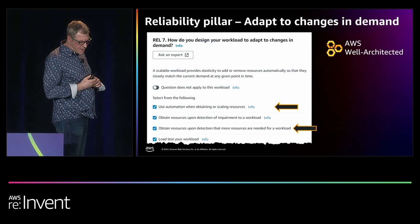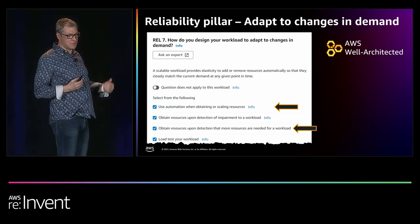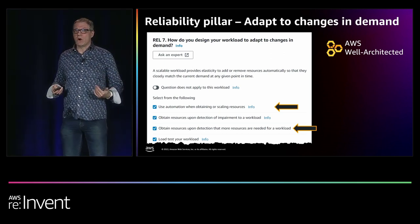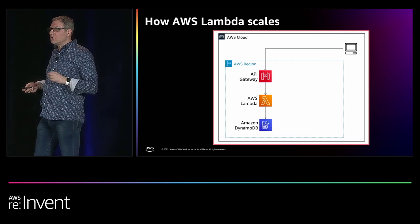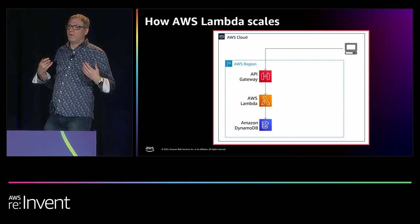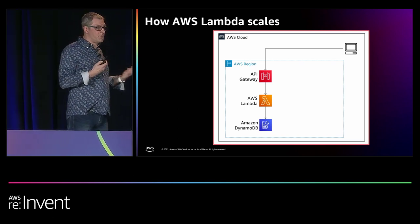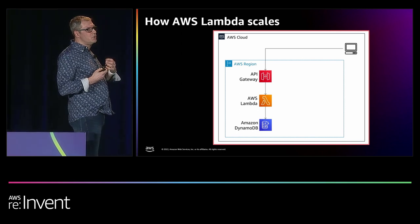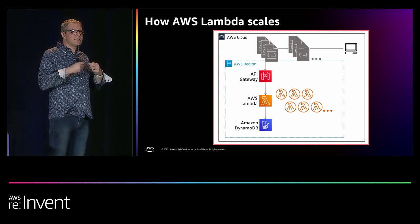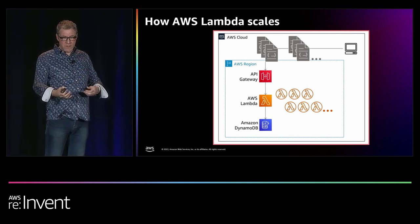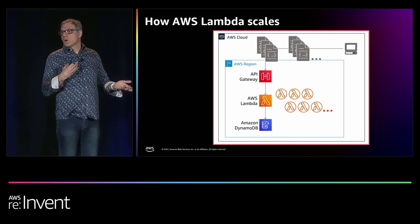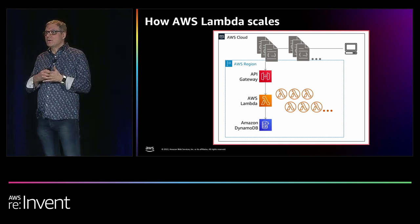The next best practices: using automation when obtaining or scaling resources, and obtaining resources upon detecting that you need them. To talk about this, I'll discuss Lambda. Lambda is a way to run code without a server — for every request it gets, it spins up a Lambda instance. So here you can see six requests, six Lambdas get spun up, they process their requests, and if there are no more requests, they spin down. It is automatically scaling — it'll scale up and down based on the number of requests you get.